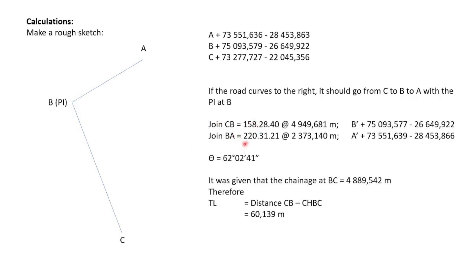For B to A, the direction is 220 degrees and the distance is 2300 meters. Make sure you test them back to check that you get very similar coordinates to what you used. Our deflection angle is 62 degrees. We get this by taking the difference between the directions BA and BC — that angle is your 62 degrees, which is the deflection angle we'll use in the rest of the calculations.